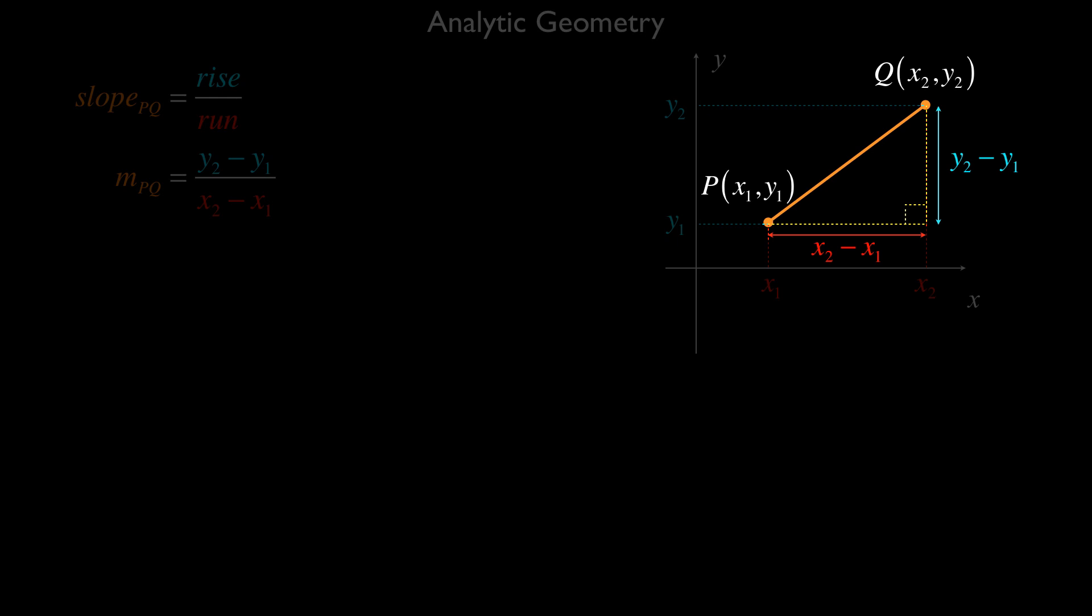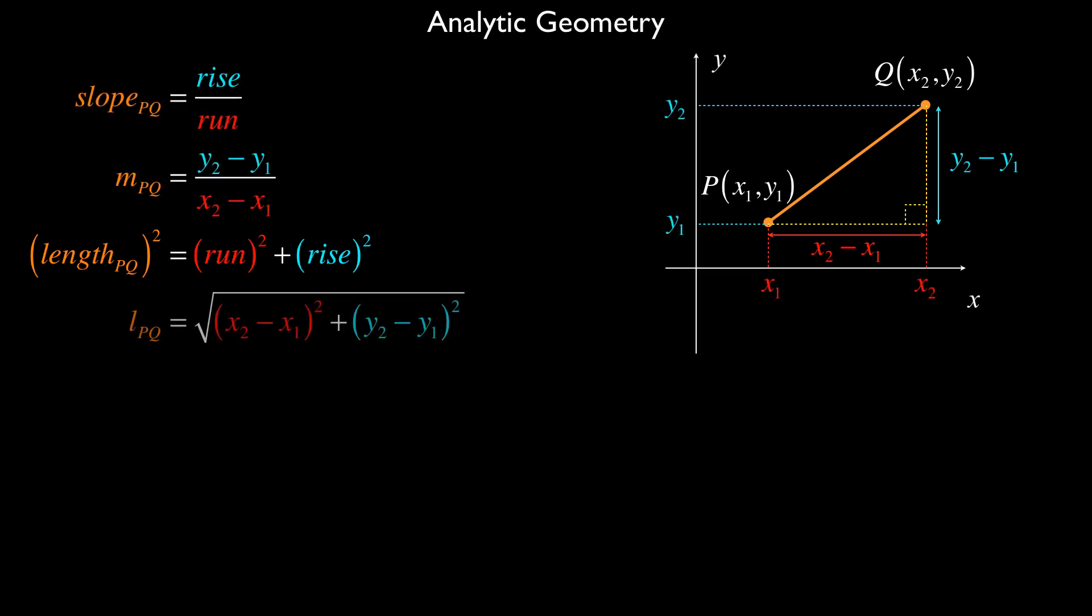So if I were to express that for the diagram that we have here, we see that the length of PQ squared would be equal to the run squared plus the rise squared. We can then substitute for the run and the rise and take a square root. And we understand that the length of PQ is the square root of (x2 minus x1) all squared plus (y2 minus y1) all squared.